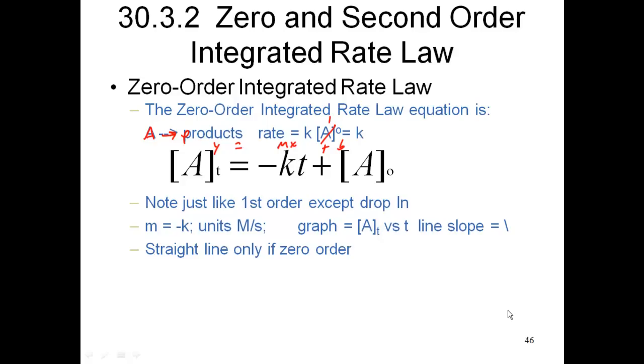Now, since this is in the Y equals MX plus B format, we can draw a plot, which would mean that on my Y axis would be concentration of A at time t, and on my X axis would be t. And since it's a negative slope, my line will slope down, and the slope of that line will be equal to negative K. And the Y intercept would be A_0. Now, if I draw this plot and I get a linear plot, then that would mean that I have a zero order overall equation.